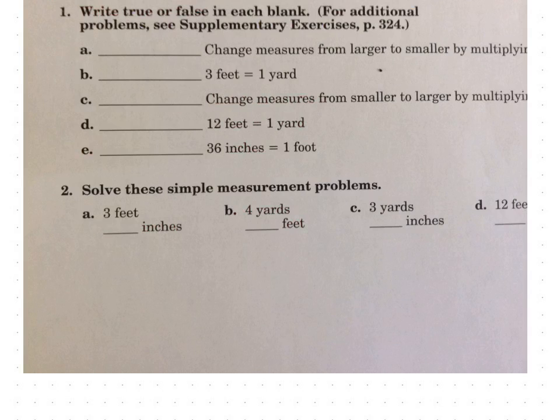Look at number one. We'll do some of these together. Write true or false in each blank. Change measures from larger to smaller by multiplying. That is true. So go ahead and write true there. Don't just write T, write true. Three feet equals one yard. Is that true or false? That is true. Changes measures from smaller to larger by multiplying. No. If you go smaller to larger, you divide. So that is false.